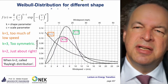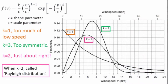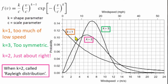Here you see the effect of k. K equal to 2 is very typical — this is the Rayleigh distribution. If you go to k equal to 1, then we have too much low speed. If you go to k equal to 3, it gets quite symmetric. These are the different Weibull distributions and the shape factor as a function here.